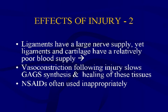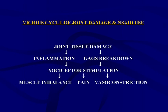On the effects of injury: ligaments have a very large nerve supply, yet ligaments and cartilage have a relatively poor blood supply. Vasoconstriction following injury slows GAG synthesis and healing of these tissues. Non-steroidal anti-inflammatory drugs are often used inappropriately — joint tissue damage causes inflammation, GAG breakdown, and nociceptor stimulation, which causes muscle imbalance, instability, and pain, driving patients to use NSAIDs.